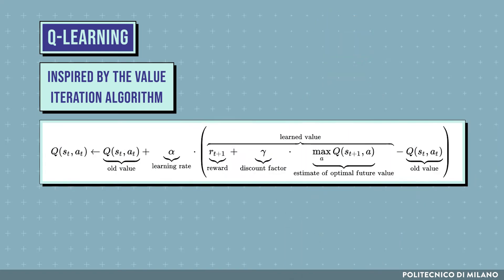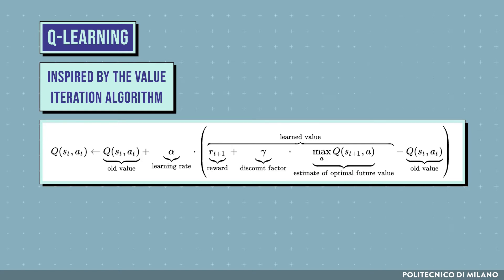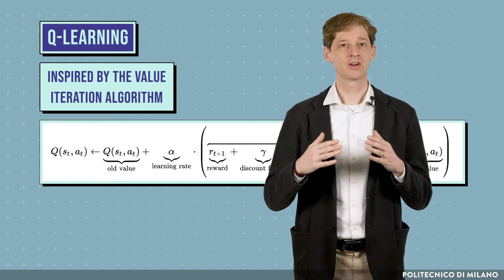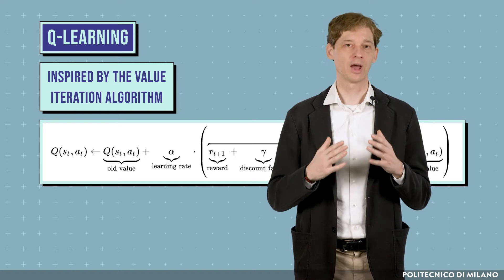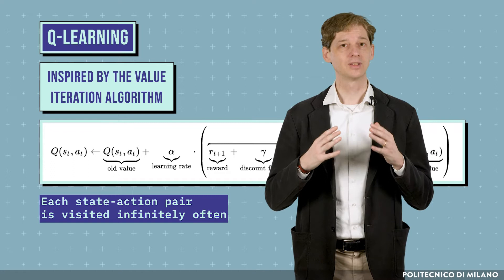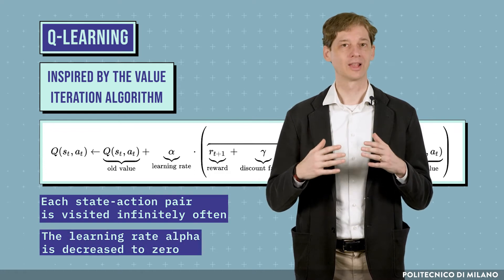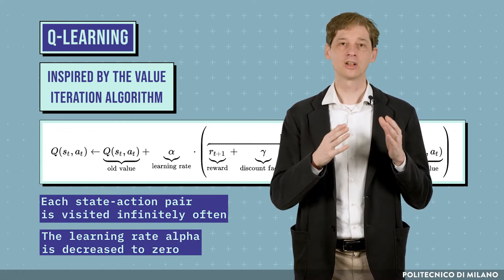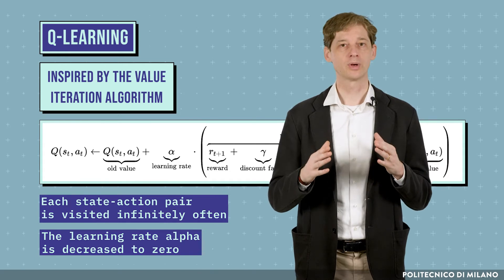After performing action A in state S, Q-learning updates the value associated to the state-action pair S-A, using the immediate collected reward and the value associated with the best estimated action in the next state. Q-learning is guaranteed to converge to the optimal value function under the assumption that each state-action pair is visited infinitely often, and that the learning rate alpha is decreased to zero according to a proper decay schedule.